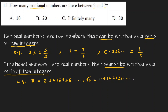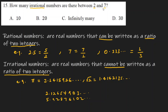Based on the definition — a number that cannot be written as a ratio of two integers is an irrational number. So, how many irrational numbers are there between 2 and 7? The answer is infinitely many. In general, between any two integers there are infinitely many irrational numbers.